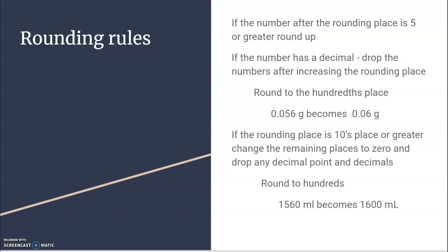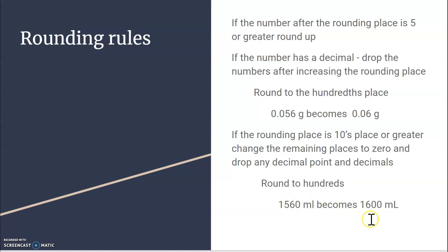What if the number after the rounding place is five or greater? Then we round up. For example, 0.056 grams rounded to the hundredths place: the number after the hundredths place is six, so I increase the hundredths digit and drop everything after. For 1560 rounded to the hundreds place, the number after the five is six — greater than five — so I round the five up to six, and change the remaining numbers to zeros. So 1560 becomes 1600.